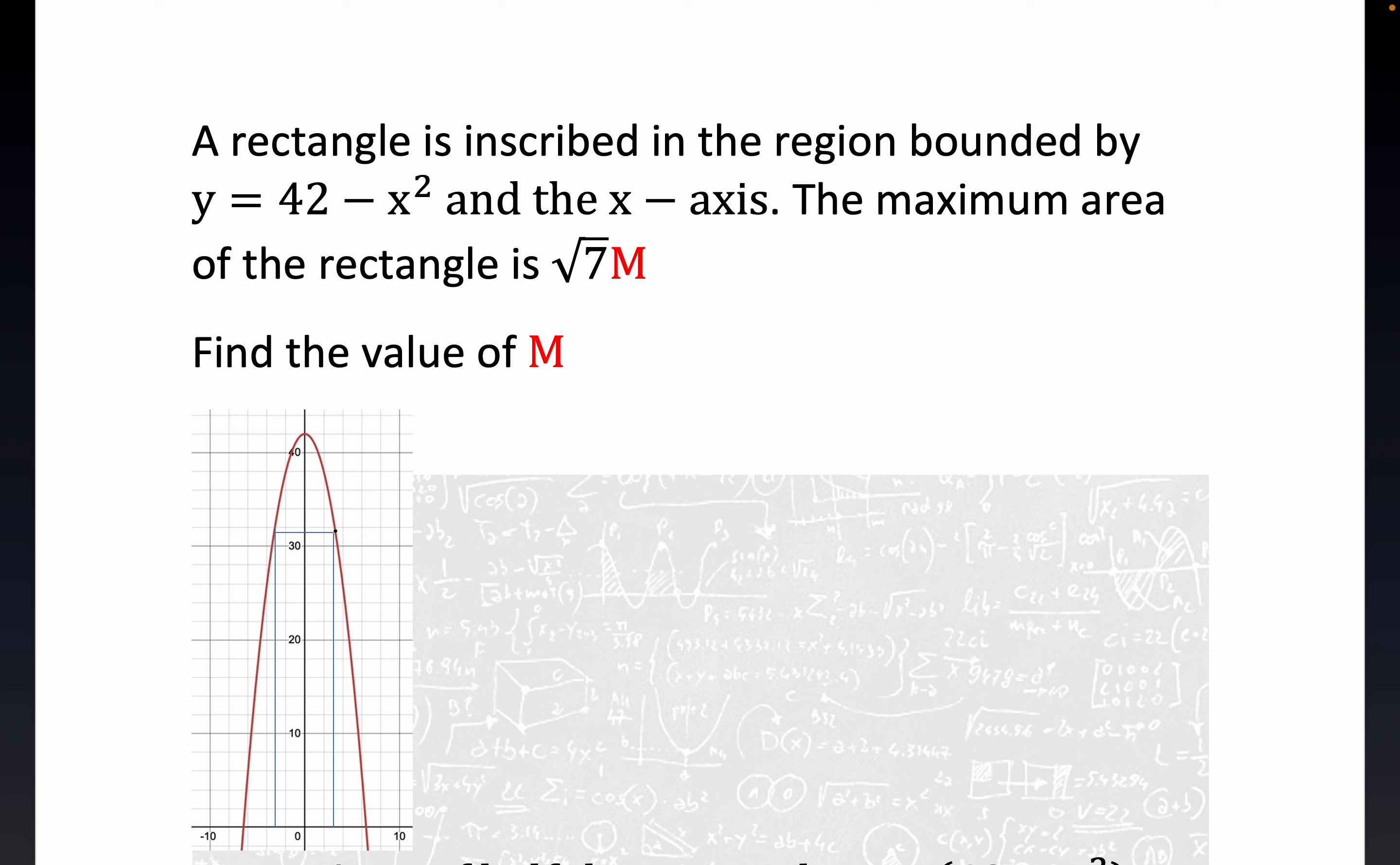Hey everybody, another competition-style problem. Let me label a point on this graph where we have a parabola and an inscribed rectangle.